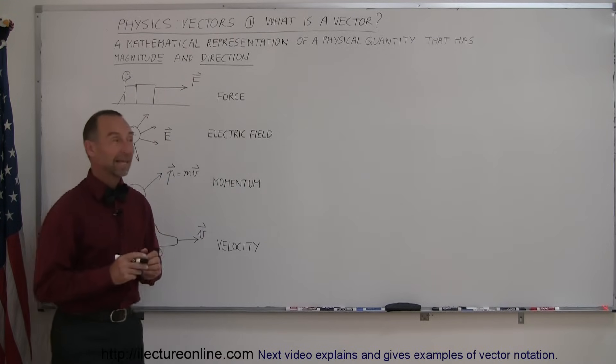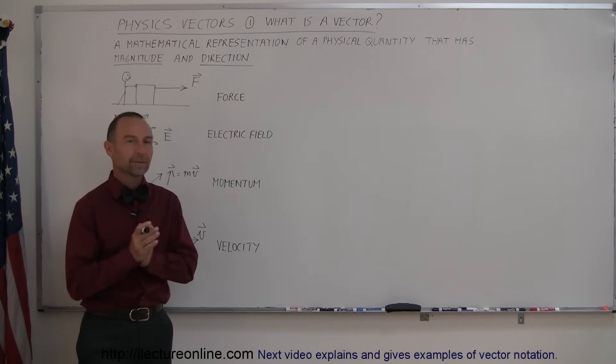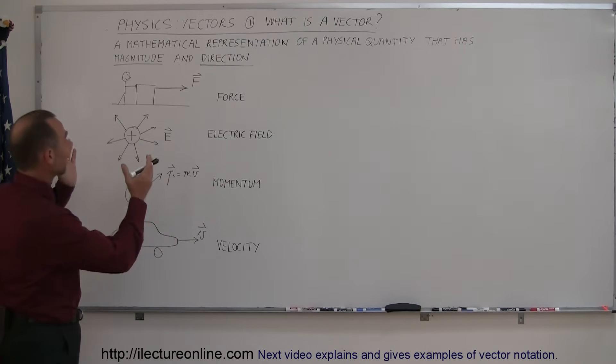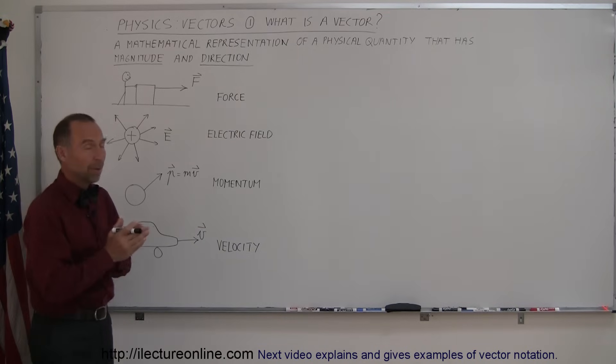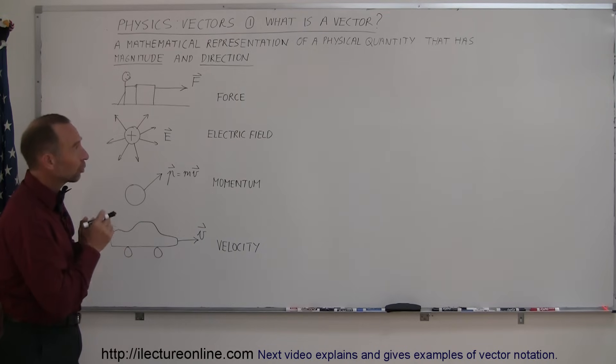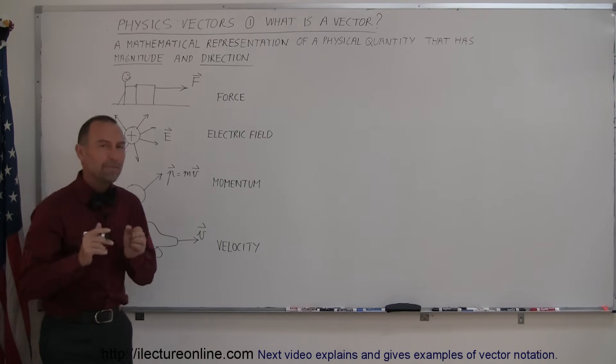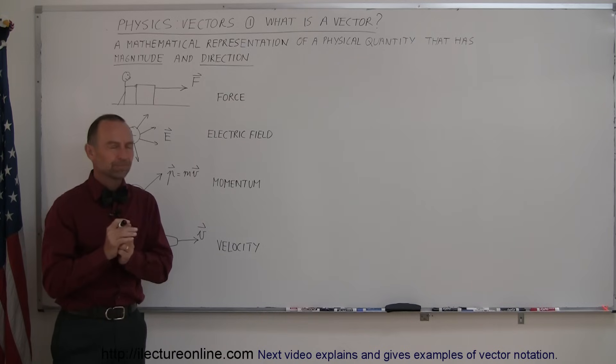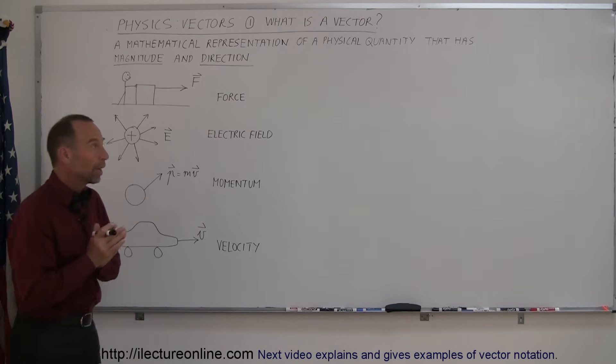Welcome to ElectronLine, and in this series we're going to talk about the concept of a vector. Now a vector, as I described here, is a mathematical representation of a physical quantity that has both magnitude and direction. So what do we mean by that? Well, let me first give you some examples in physics of the kind of things you're going to encounter.